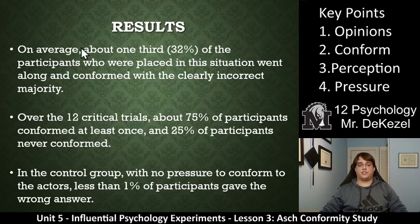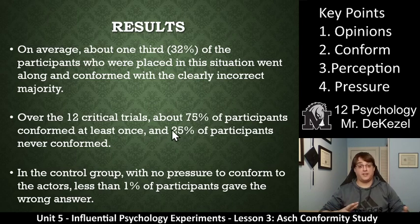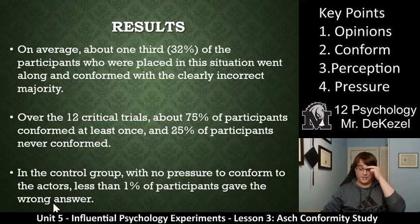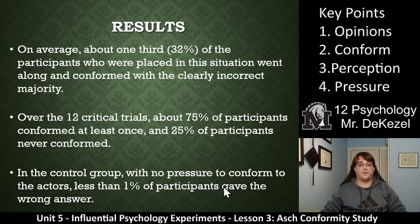So the result: on average, about one third of the participants who were placed in the situation went along and conformed with the clearly incorrect majority. And over the 12 critical trials, about 75% — or three quarters — of the participants conformed at least once. And 25% of the participants never conformed. Even though it was very obvious which was the correct answer, 75% of the people answered incorrectly just to conform with the group at least one time. 32% of the people did it most of the time. In the control group, when there was no pressure to conform, less than 1% of the participants gave the wrong answer.